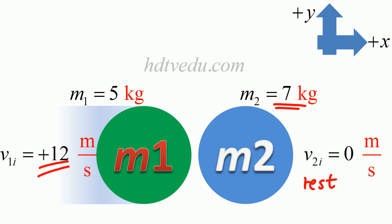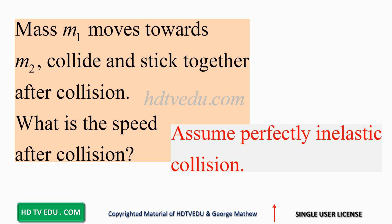After collision they stick together. What is going to be the speed after collision? Mass m1 moves towards m2, they collide and stick together after collision. What is the speed after collision? Assume perfectly inelastic collision.